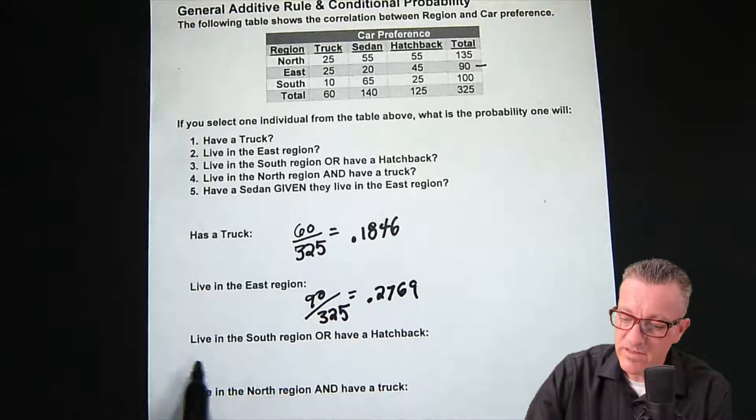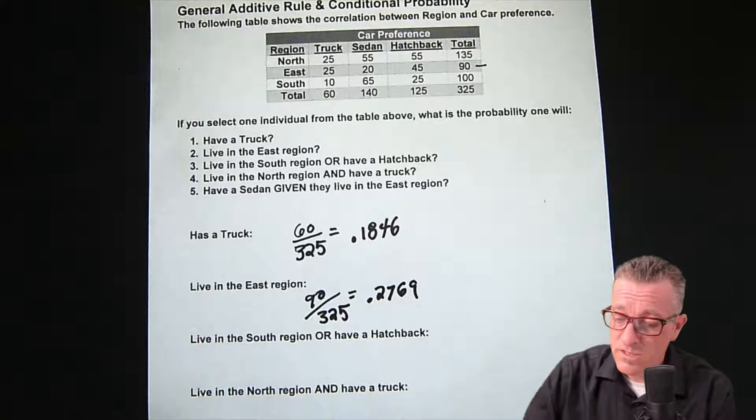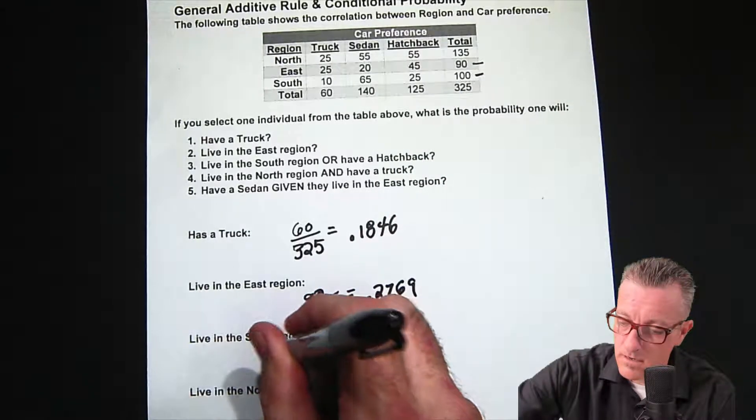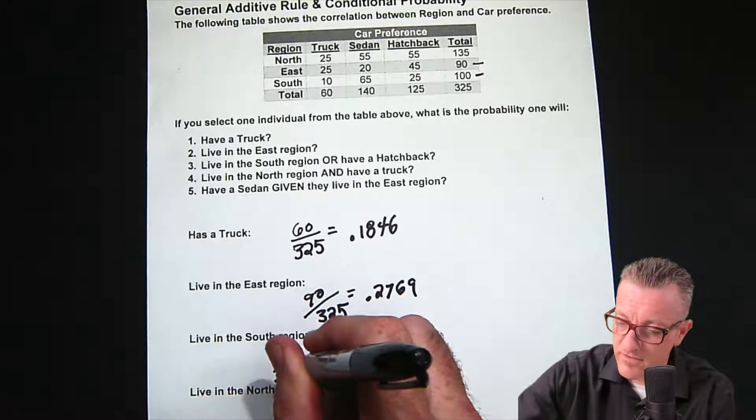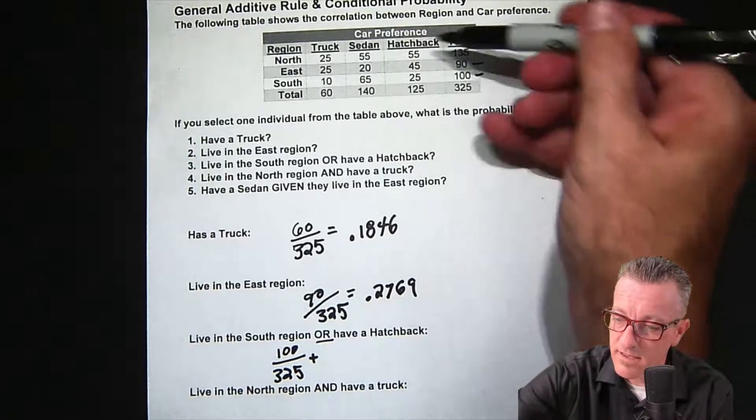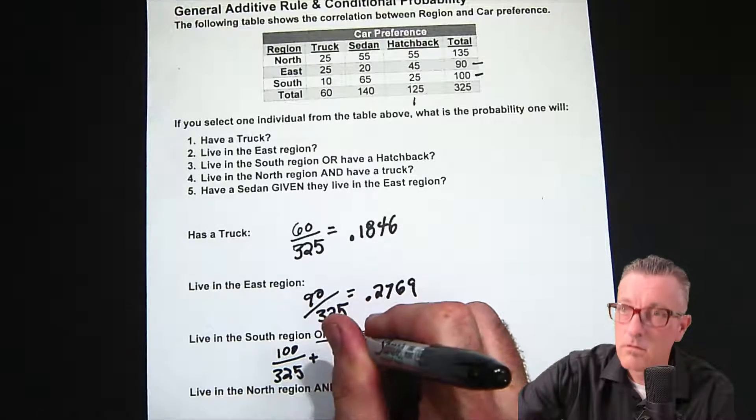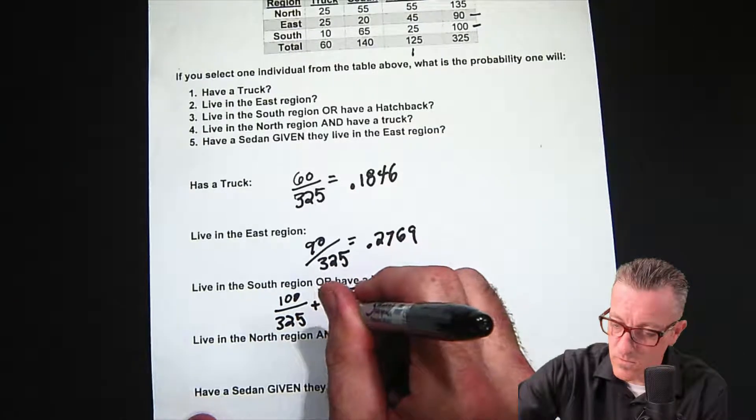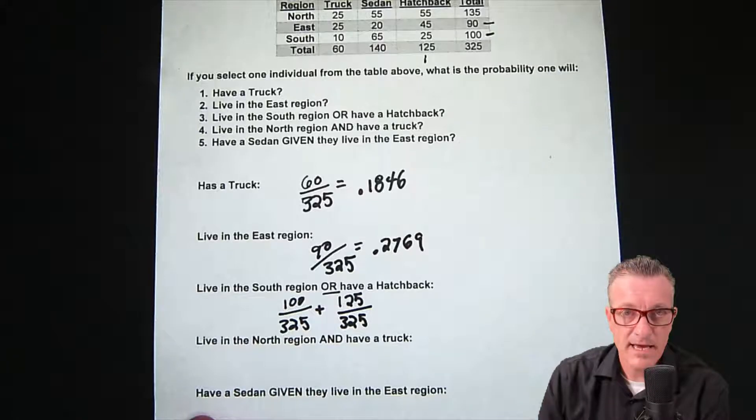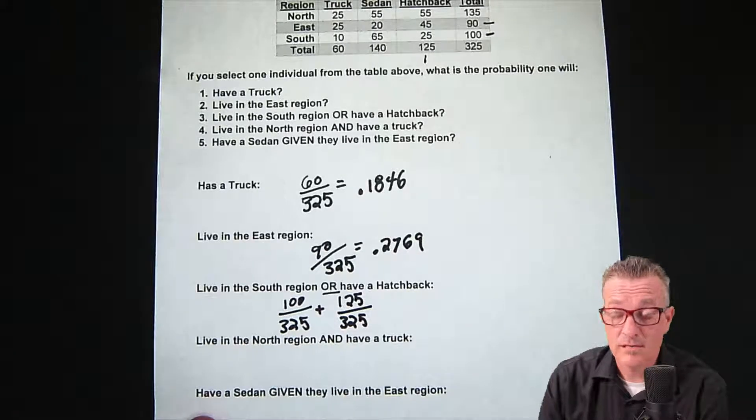Live in the South region or have a hatchback. Now it's getting a little bit more complicated, but contingency tables are pretty good for this type of problem. We have to find everybody that lives in the South, so we go across and it's 100, so it's going to be 100 over 325. Because it's an OR, we're going to use addition. And then have a hatchback, so the hatchback, the vertical here, so it's the 125 over 325. Here's the rub on this one - we are not looking for the person that is in the South that has a hatchback, we're looking for one or the other. If we don't take out that overlap we'll end up counting that overlap twice.